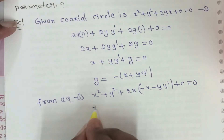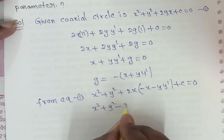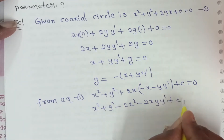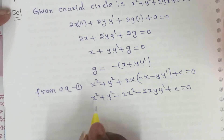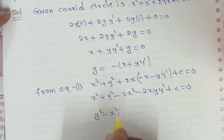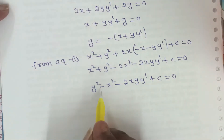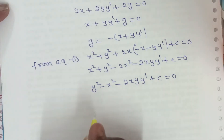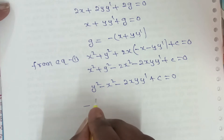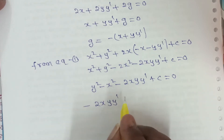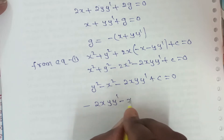Expanding: x² + y² - 2x² - 2xy·y' + c = 0. Simplifying: -x² + y² - 2xy·y' + c = 0. Rearranging: 2xy·y' + x² = c + y², so 2xy·(dy/dx) + x² = c + y².